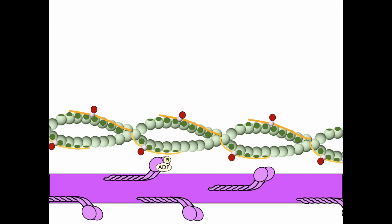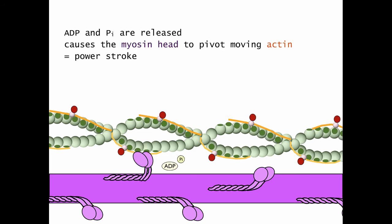The energized myosin head has a phosphate and adenosine diphosphate group attached to it. When the tropomyosin molecule moves away from the active sites on actin, myosin heads will automatically bind. When the phosphate and ADP molecules are released, this will cause the myosin head to pivot, moving actin. Again, we call this the power stroke.